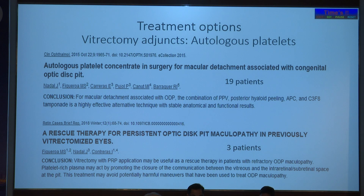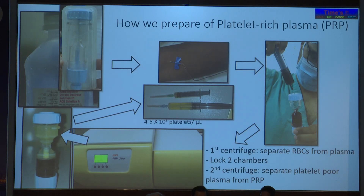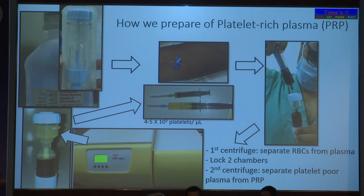We are currently using PRP — platelet rich plasma, not panretinal photocoagulation — which we harvest from the patient about 20 minutes before surgery. At the end of surgery, just two or three drops are placed over the optic disc and then closed with gas. The results are quite encouraging. We use 18 ml of blood with 2 ml of ACD, centrifuged twice, getting almost 10 lakh per cubic millimeter platelets. Platelet-rich plasma is antimicrobial against every bacterium except Klebsiella.